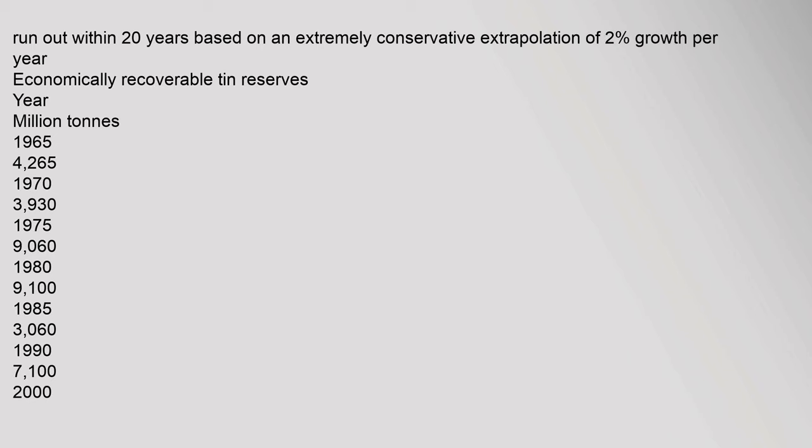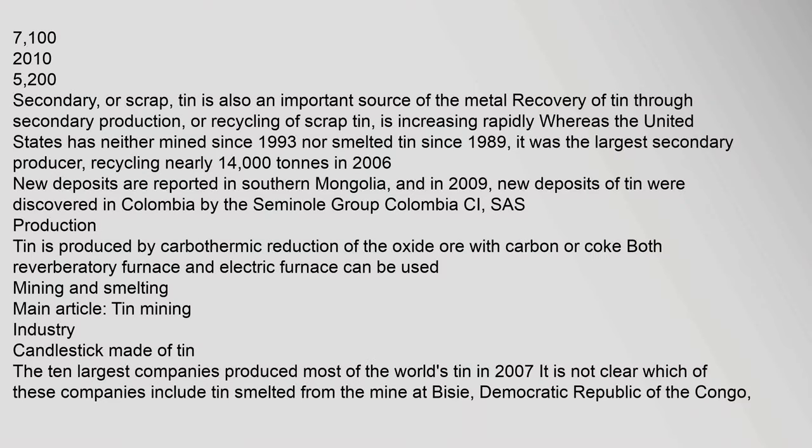Economically recoverable tin reserves were projected to run out within 20 years based on a conservative extrapolation of 2% growth per year. Secondary or scrap tin is also an important source of the metal. Recovery of tin through recycling is increasing rapidly; whereas the United States has neither mined since 1993 nor smelted tin since 1989, it was the largest secondary producer, recycling nearly 14,000 tons in 2006. New deposits are reported in southern Mongolia, and in 2009 new deposits of tin were discovered in Colombia.